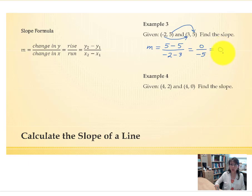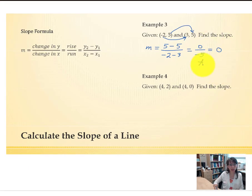When the slope is 0, this is a special line, and slope of 0 represents a horizontal line.